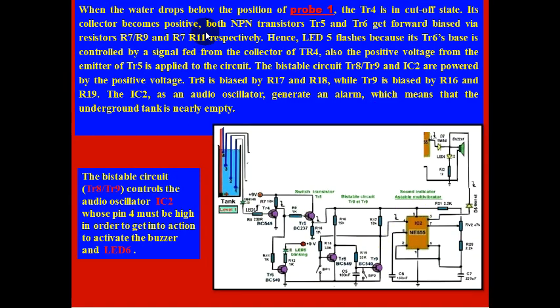When the water drops below position of blow-off probe 1 here, at this level, the TR4 is in cutoff state. Its collector becomes positive, so both NPN transistors TR5 and TR6 get forward biased via resistors and LED5 flashes because TR6 base is controlled by a signal fed from the collector of TR4.